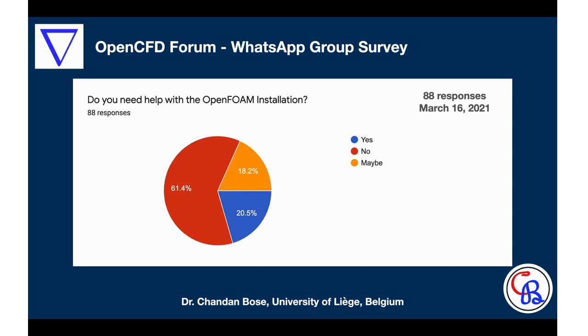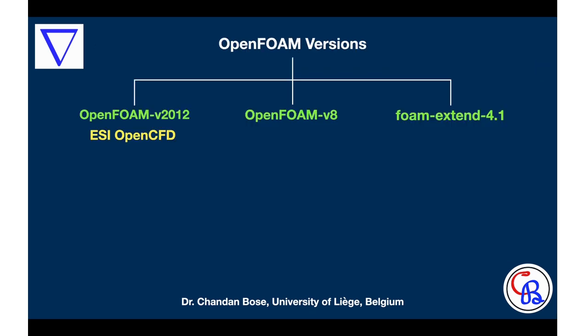I will do three successive videos in the installation series. This first video will be on Windows Subsystem for Linux for those using Windows 10. The second one will be based on the Ubuntu operating system, and the third one will show how to install OpenFOAM on an HPC system or high performance computing cluster. There are three forks to the OpenFOAM library: the ESI OpenCFD version with recent version OpenFOAM v2012, the Foundation version with recent version OpenFOAM 8, and the community-driven project Foam-extend with recent version 4.1.